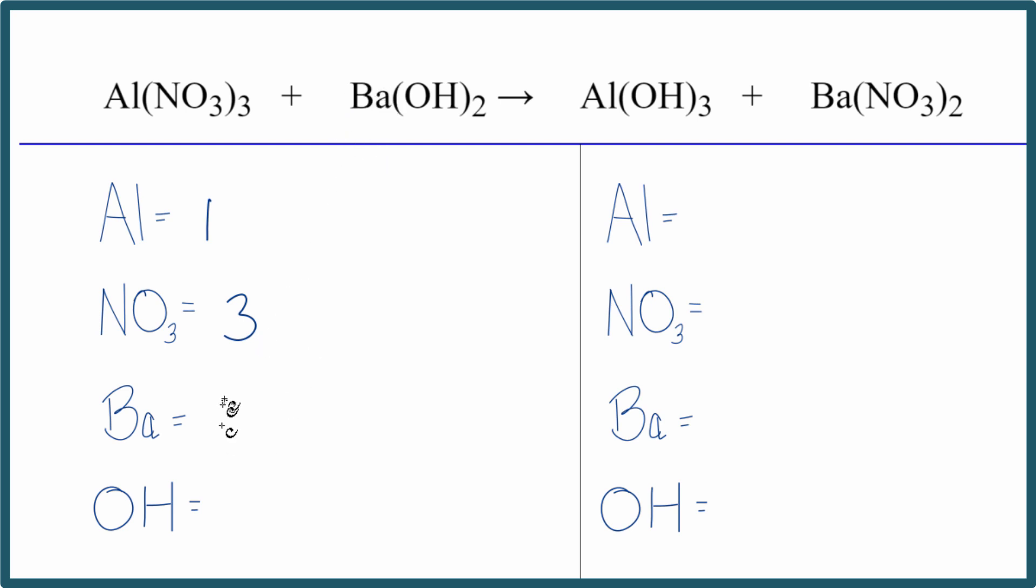One barium. And OH, we have it here, stays together in the reaction. We have it here. So we just say we have one times two, so we have two hydroxides. You see this is really kind of neat, makes it a lot easier to look at the numbers.